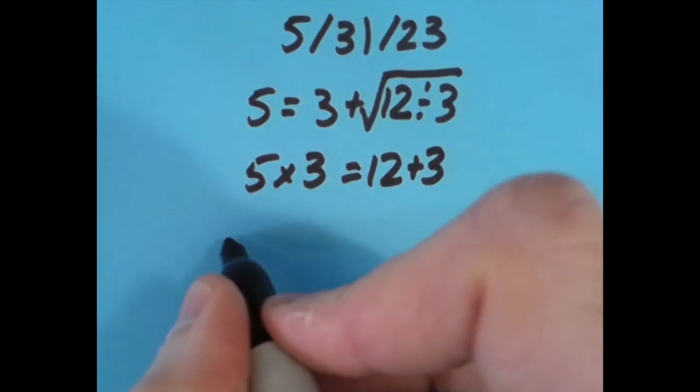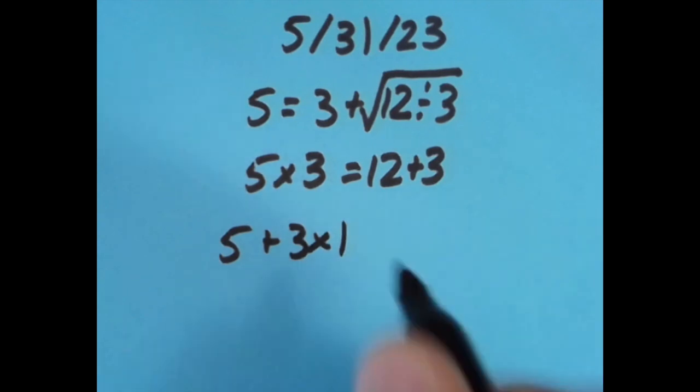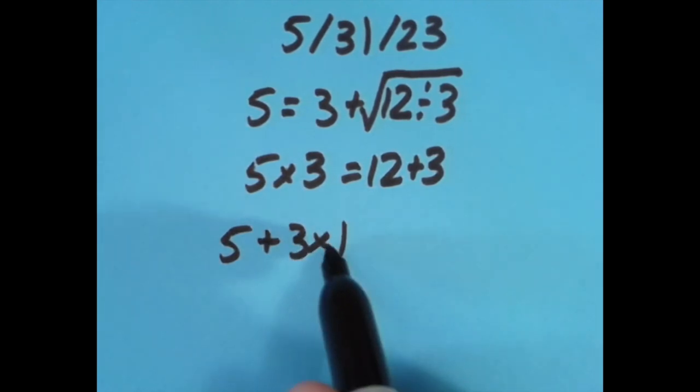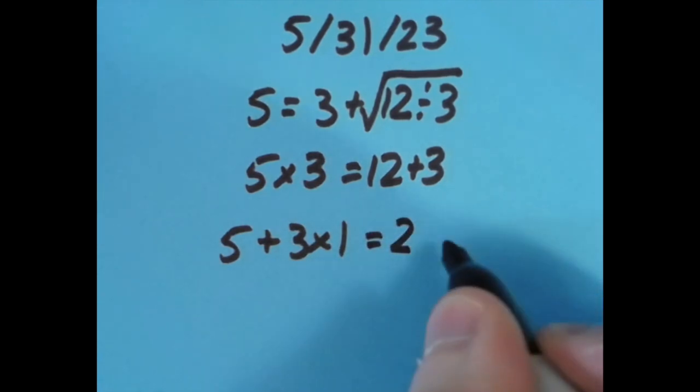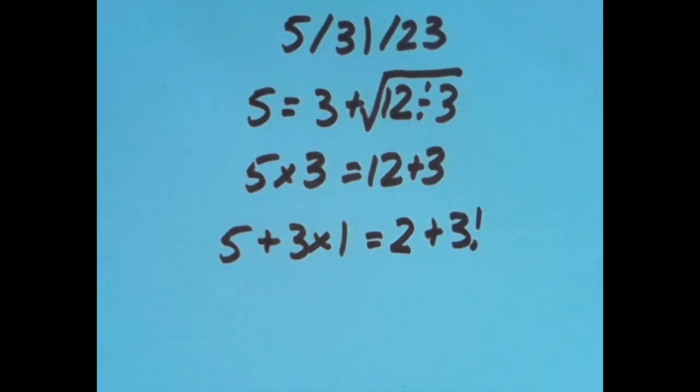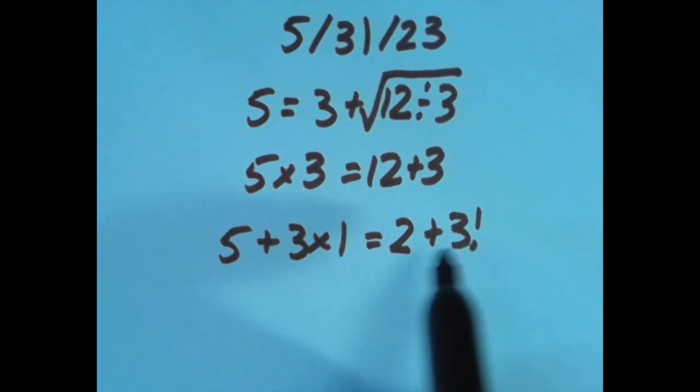With the equal sign over another spot to the right, I said 5 plus 3 times 1. Now we have to do this multiplication before the addition here. So 3 times 1 is 3, 5 plus 3 is 8. On this side, I said 2 plus 3 factorial. 3 factorial is 3 times 2 times 1, which gives us 6. And if you're not familiar with the factorial, there's more information in the description of today's video. But this is 6, so we have 2 plus 6 is 8, and this is 5 plus 3, which is also 8.